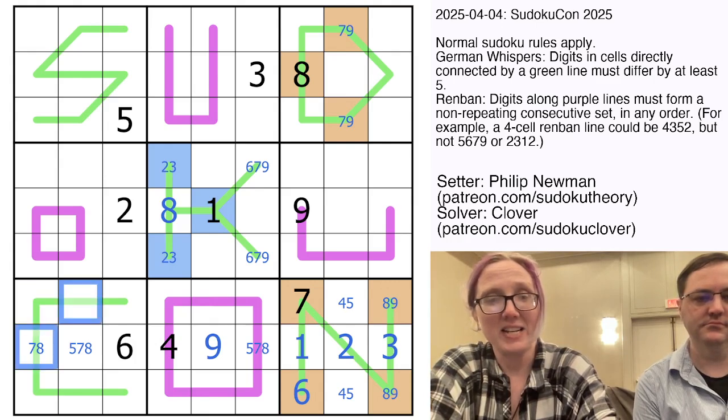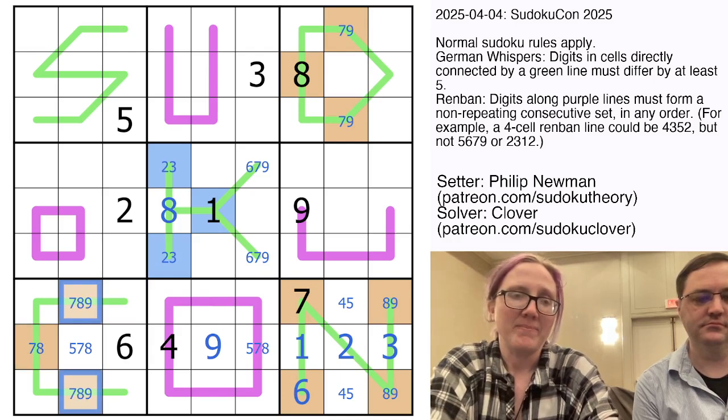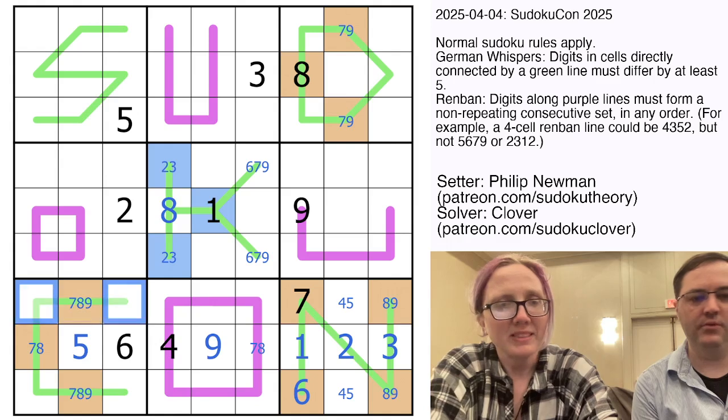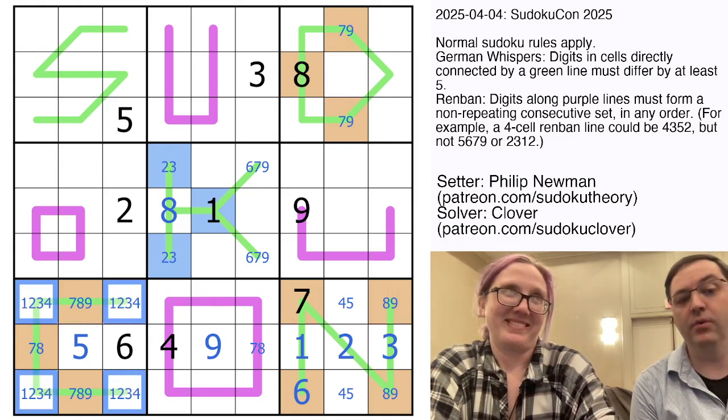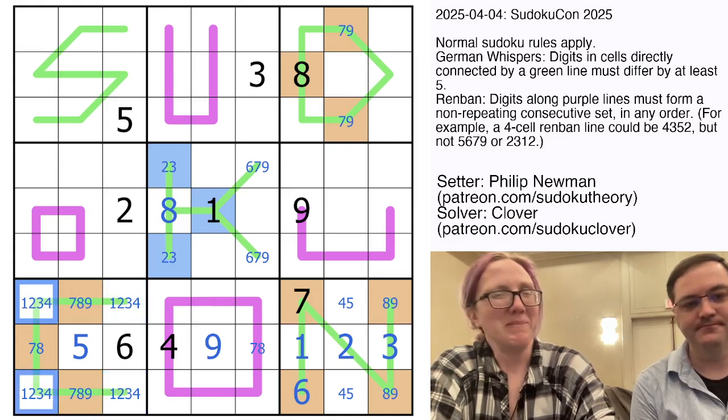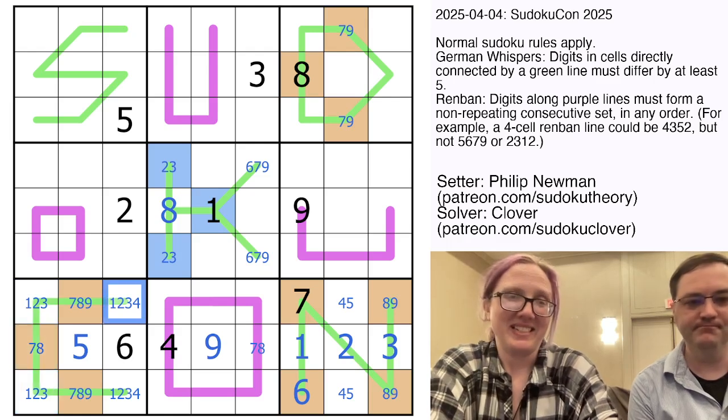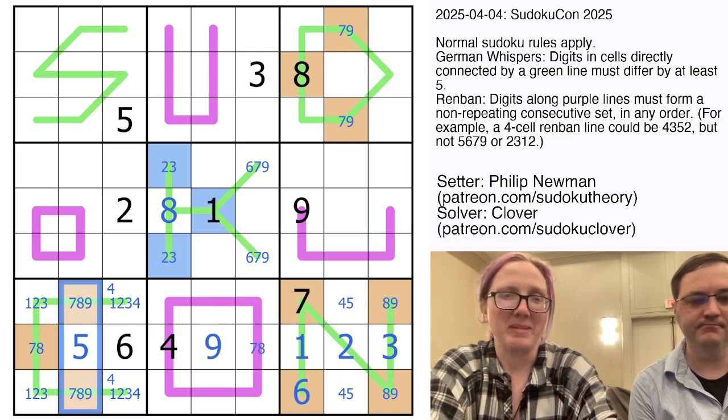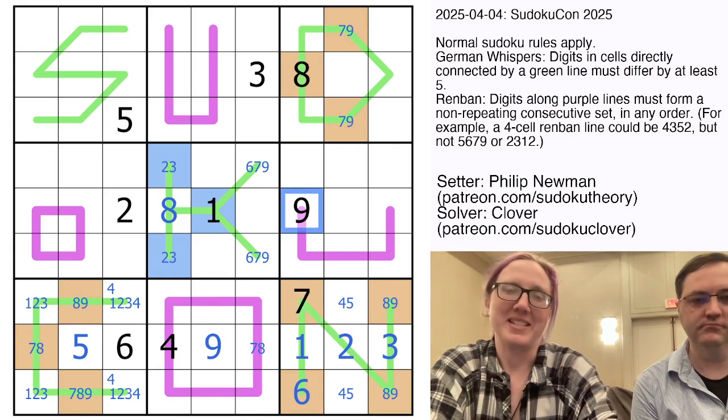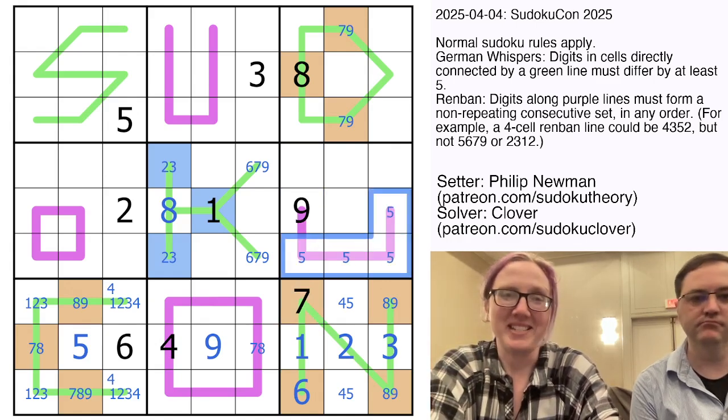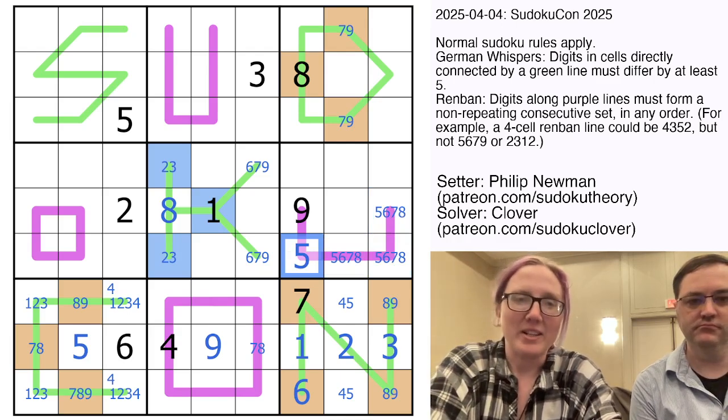That leaves five, seven, and eight for the rest of this row. This guy can't be a five because five can never go on a German whispers line. There's nothing that would be able to go next to it. So now we know this is high and we can color these guys orange. They are not six. So they have to be seven, eight, and nine. That makes this a five. And you could have figured out those were high because the six is already placed in the box.